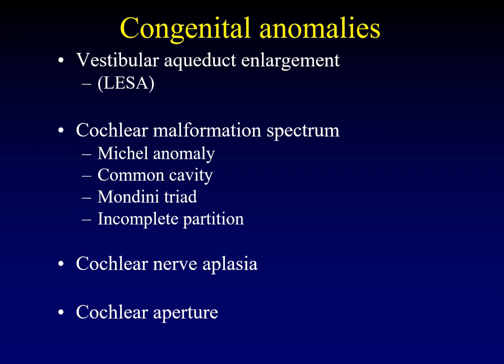Next we'll talk about cochlear nerve aplasia — a critical diagnosis because you really don't want to put a cochlear implant in a patient who doesn't have a nerve to stimulate. And then we'll discuss strictures and enlargement of the cochlear aperture that are associated with different forms of hearing loss.